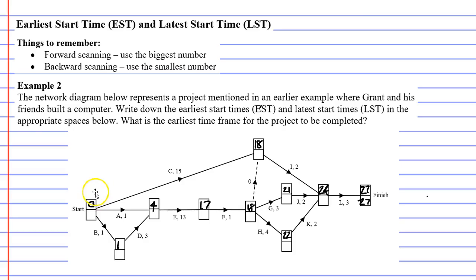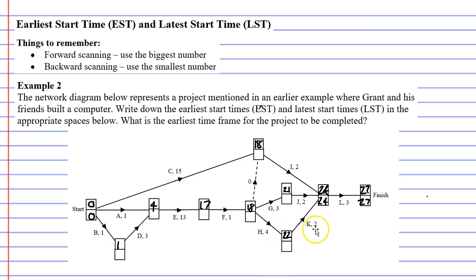If we look at our start vertex, it also has the same earliest and latest start time, so we can fill that in now with zero. Moving back to the previous vertex, activity L takes three minutes to complete, so it needs to start at least three minutes before completion. We write down 24, because 27 minus 3 gives us 24. Activity K takes two minutes — 24 minus 2 gives us 22. Activity K cannot start any later than 22 minutes into the project, otherwise we'll delay the entire project.